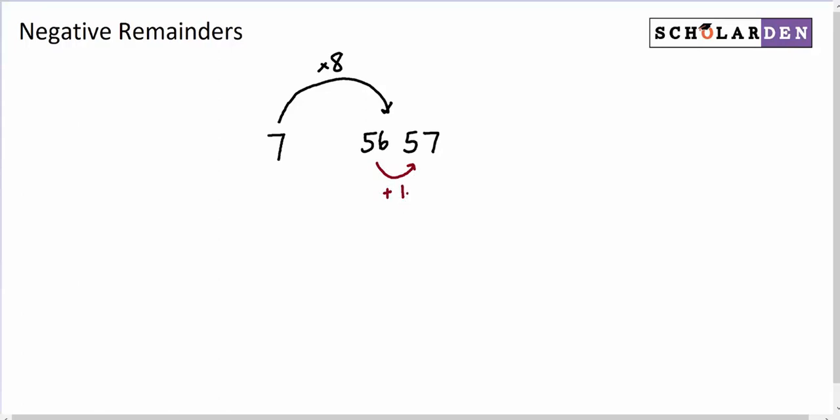But we could also think of this as 7 going into the next multiple of 7, so that would be 7 times 9, which is 63. And now we can think of that as having a remainder going the other way, and in this case, that would be negative 6.